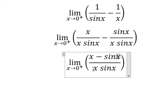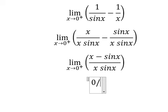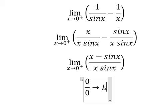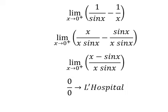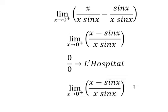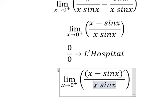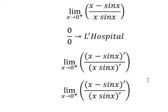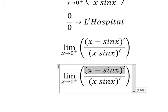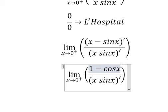When we put number 0 in here, we get 0 over 0, so we can use L'Hôpital's Rule. That means we need to take the first derivative of the numerator and the denominator. For the numerator, we have 1 minus cosine x.